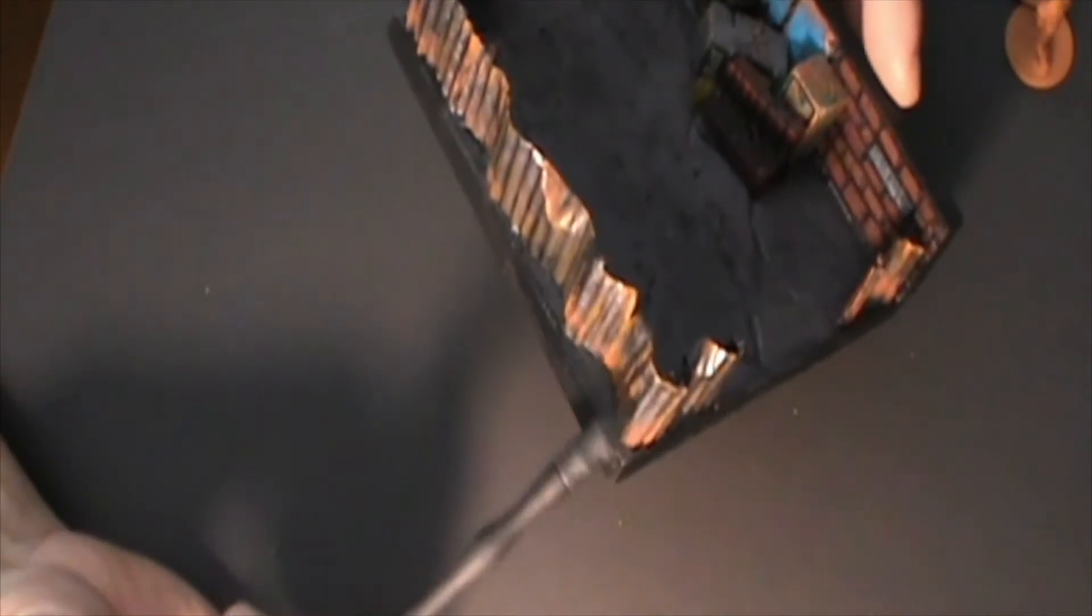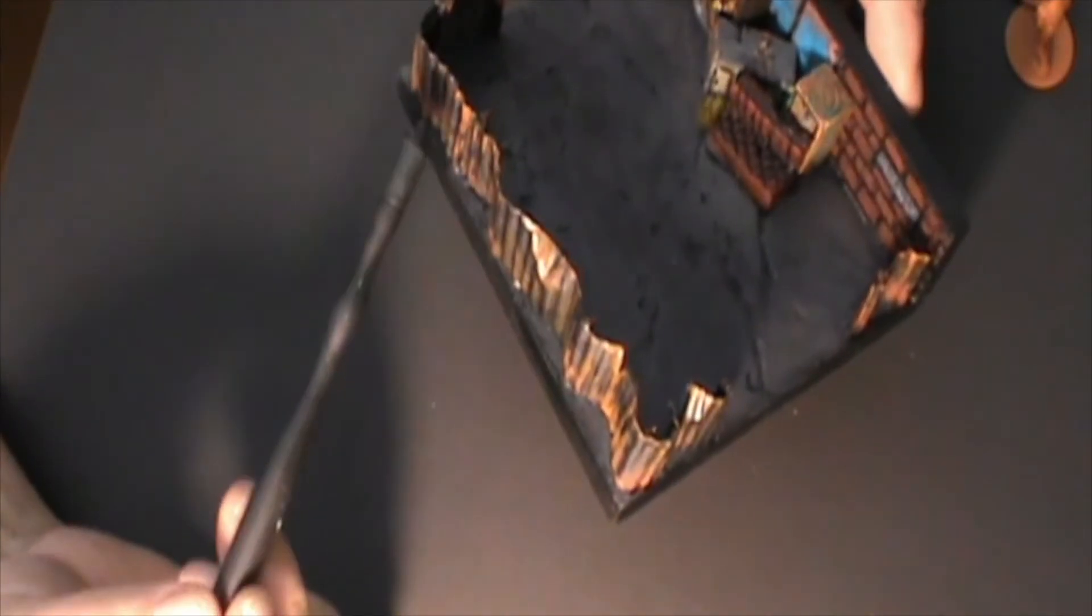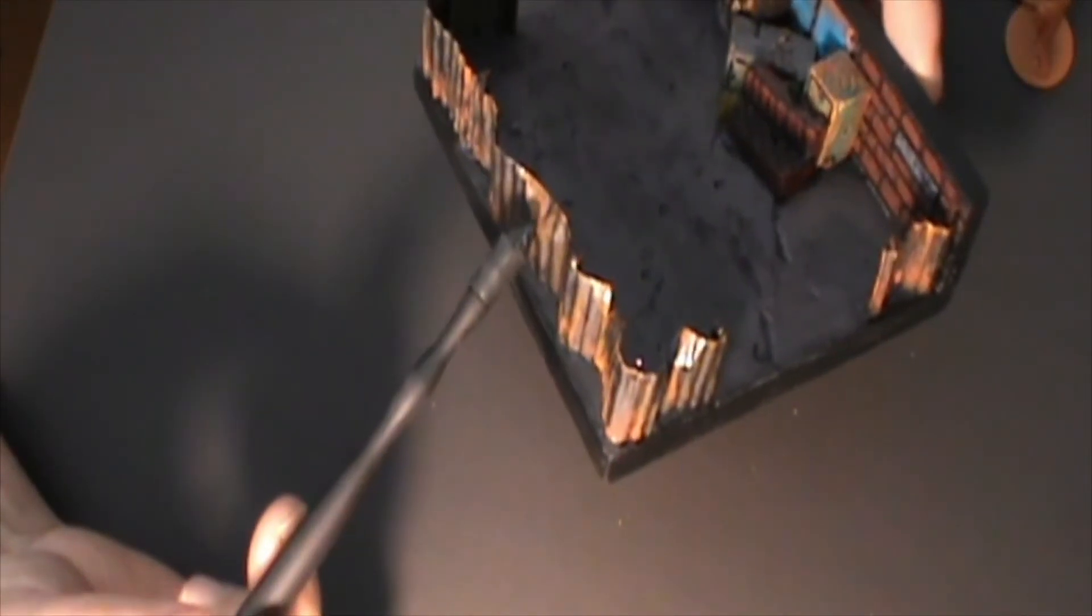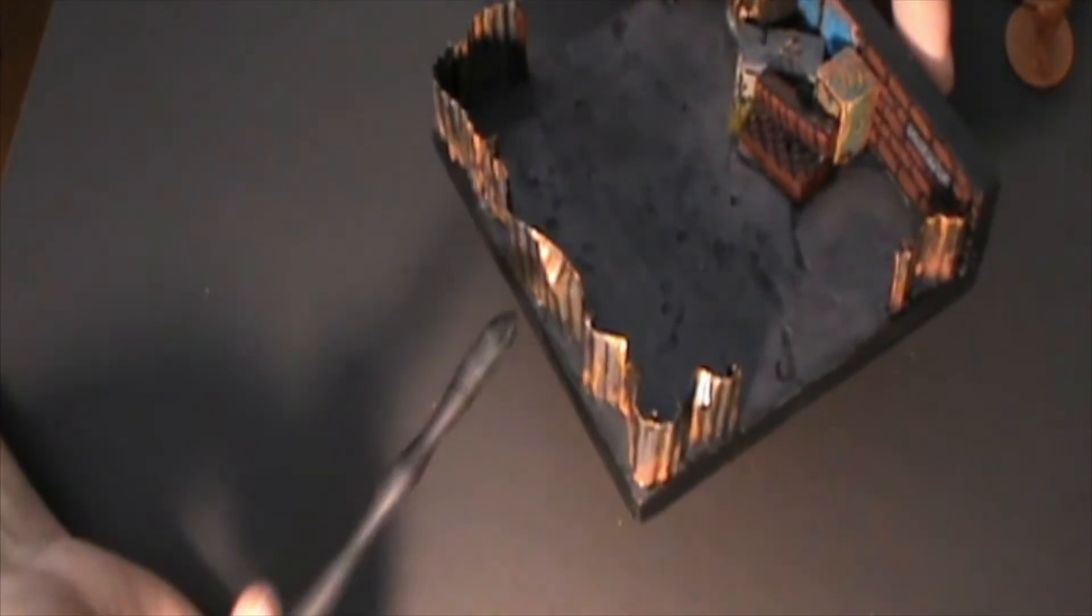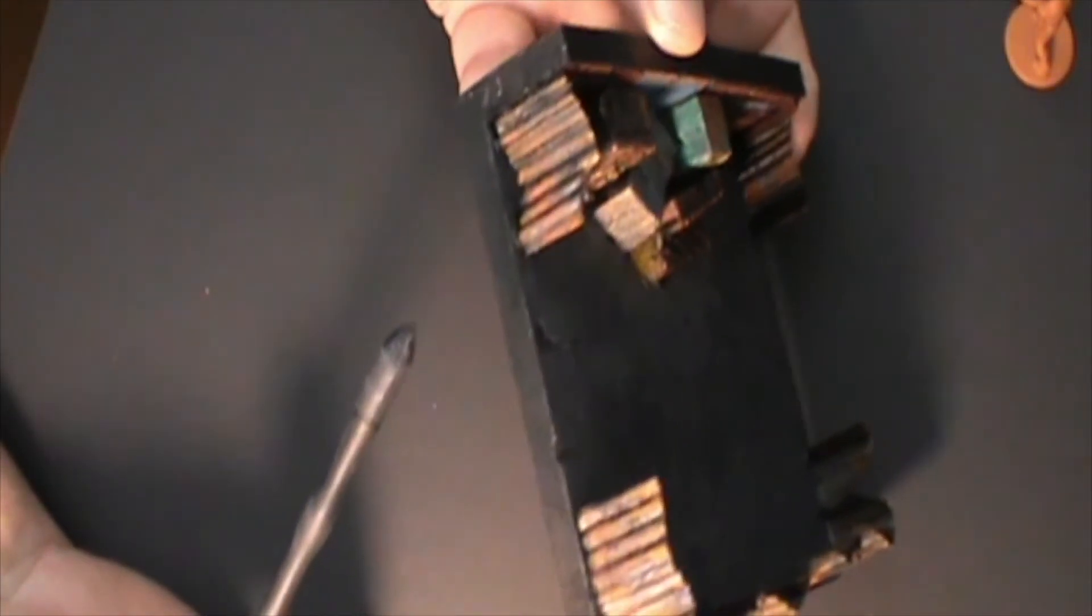When I first put this together, the corrugated iron stretched across quite tightly. But as I painted it and it softened, it became a bit saggy. Instead of cutting it and altering it, I just added all the different damage points and made sure it wasn't all facing the same direction, including this side bit here.